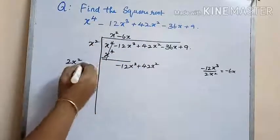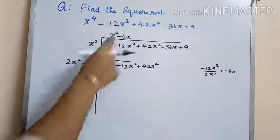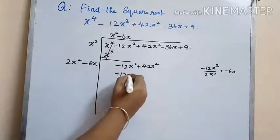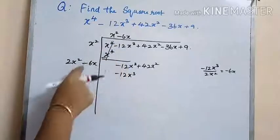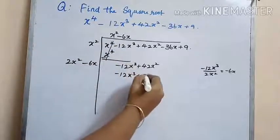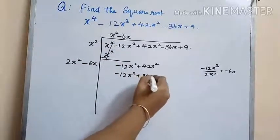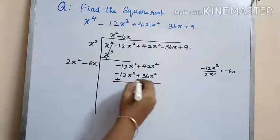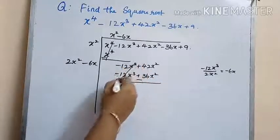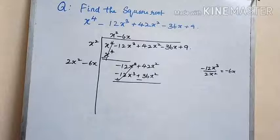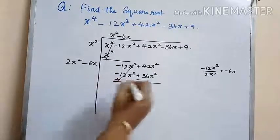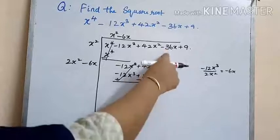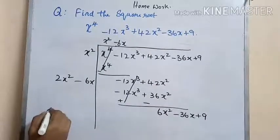Now write minus 6x in this place and in the quotient, and multiply it. So we get minus 12x cubed plus 36x squared. Changing the sign and subtracting, in the next step we get 6x squared minus 36x plus 9.